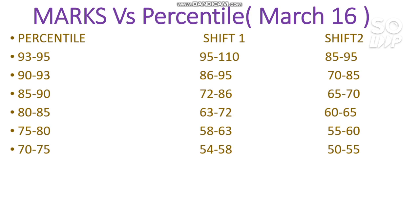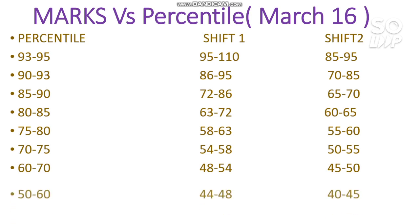For 75 to 80 percentile you need to score 58 to 63 in Shift 1 and 55 to 60 in Shift 2. For 60 to 70 percentile you need to score 48 to 54 in Shift 1 and 45 to 55 in Shift 2. For 50 to 60 percentile you need to score 44 to 48 in Shift 1 and 40 to 45 in Shift 2.